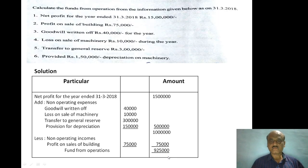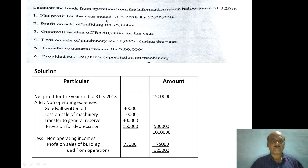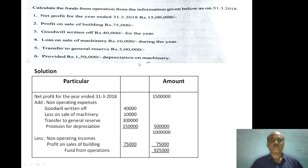Let us now see one more problem — a custom paper problem from 2019. Calculate funds from operations from the information given below as at 31st March 2018: net profit for the year ended 31st March 2018 is 15 lakh rupees; profit on sale of building 75,000 rupees; goodwill written off 40,000 rupees for the year; loss on sale of machinery 10,000 rupees during the year; transfer to general reserve 3 lakh rupees; provision for depreciation on machinery 1 lakh 50,000 rupees.